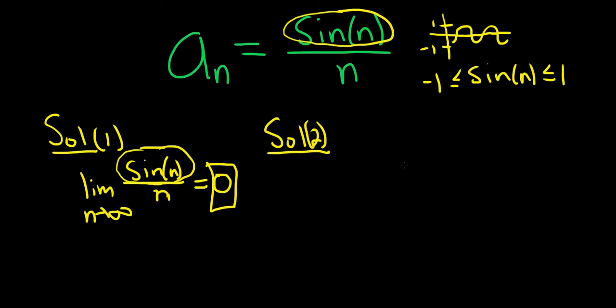Basically, you can use the squeeze theorem. So you start by writing down that the sine of n is less than or equal to one and greater than or equal to negative one. And then you have to make your inequality look like your sequence, so you just divide everything by n.